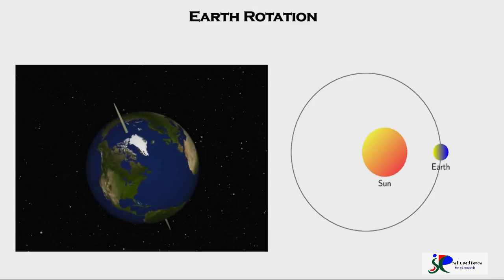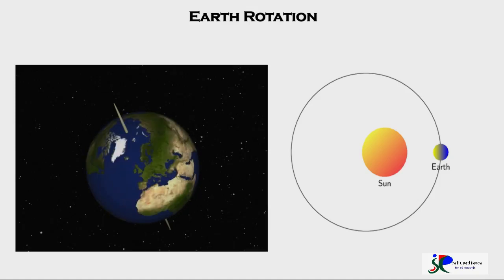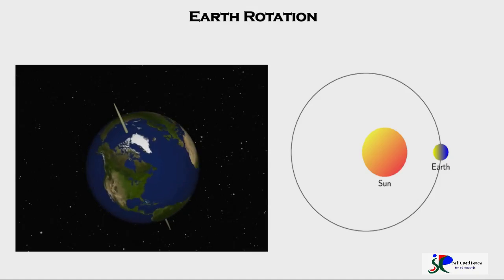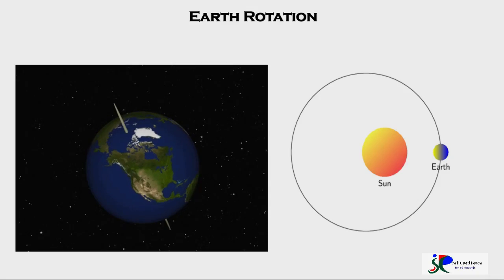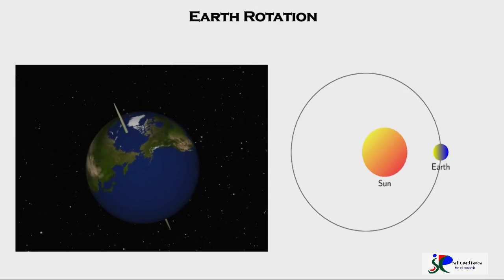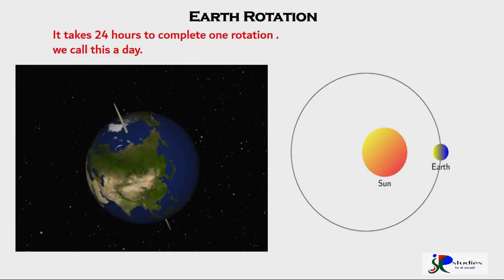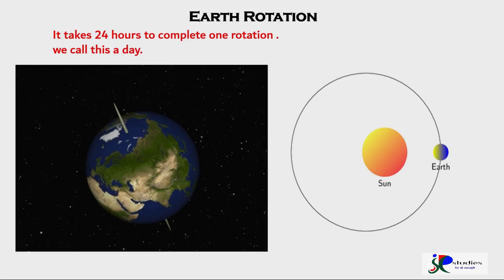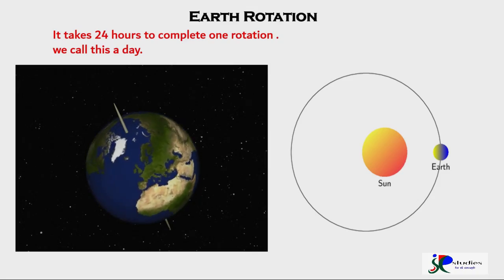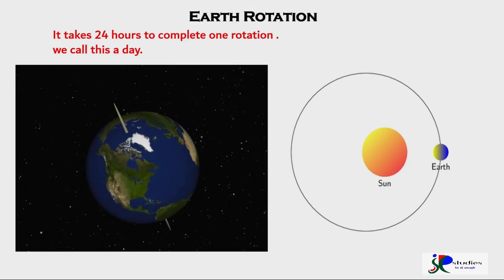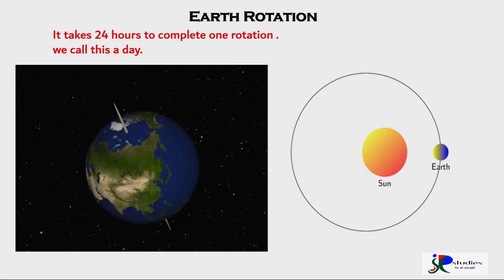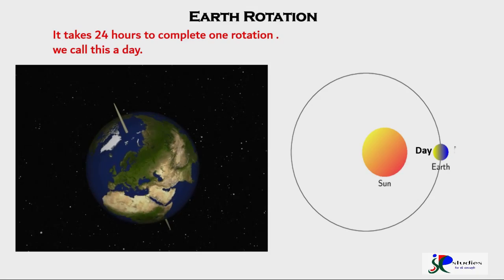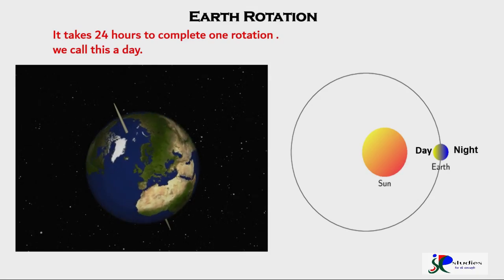We have day and night because the Earth rotates. It spins on its axis, which is an imaginary line passing through the North and South Pole. It takes 24 hours to complete one rotation — we call this a day. At any time, half of the Earth faces the Sun, and this part has day, while the other half has night.